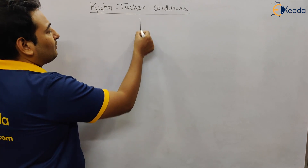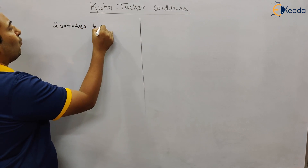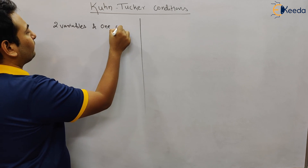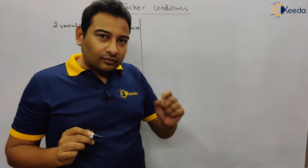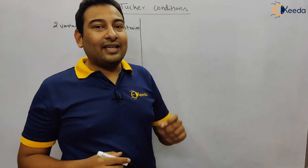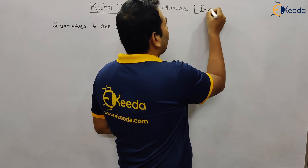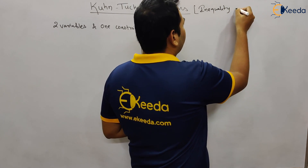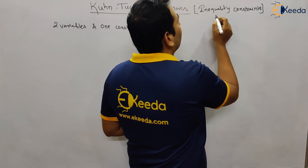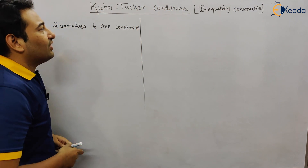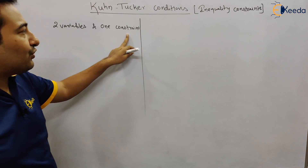There are two types of problems: the first is two variables and one constraint. An important distinction: in Lagrange's method the constraint is an equality constraint, whereas here in Kuhn-Tucker it is an inequality constraint. That is the only difference that distinguishes whether a problem is Kuhn-Tucker or Lagrange's.